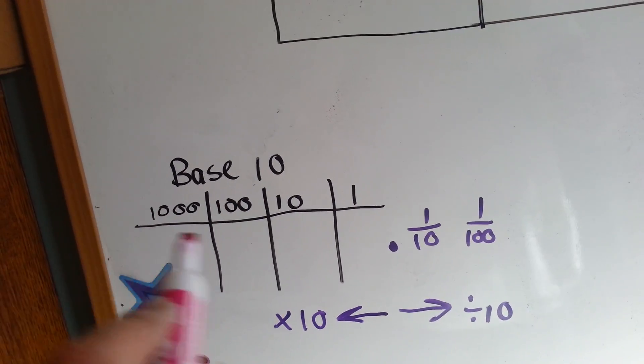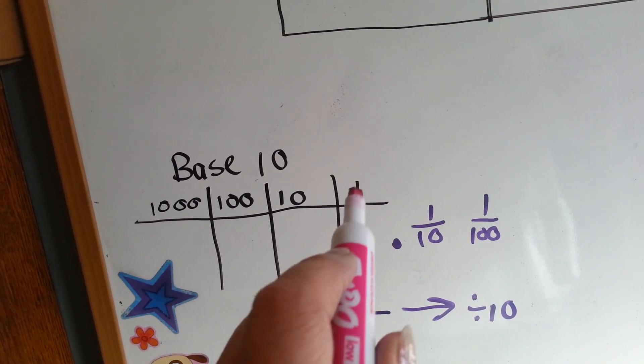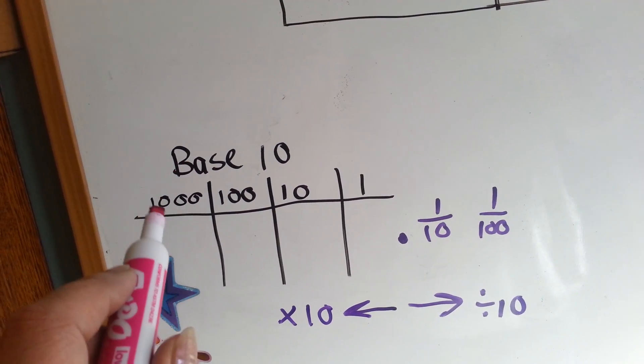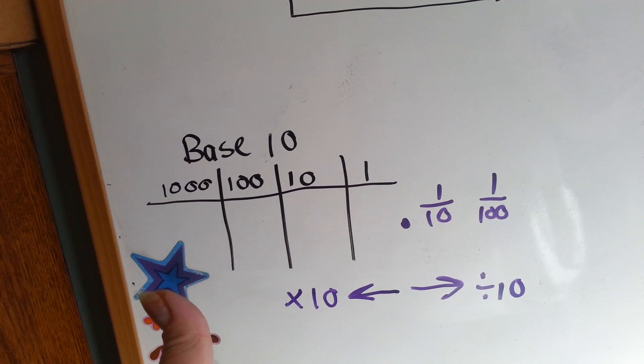Every time we go to the left to make a new place value column, we multiply by 10. 1 times 10 is 10, 10 times 10 is 100, 100 times 10 is 1000, and so on. We just keep multiplying by 10, going to the left.